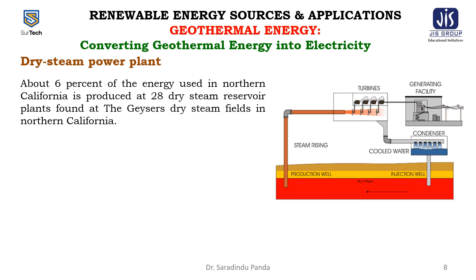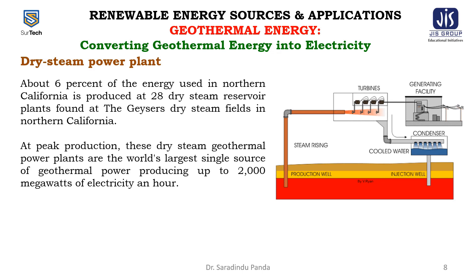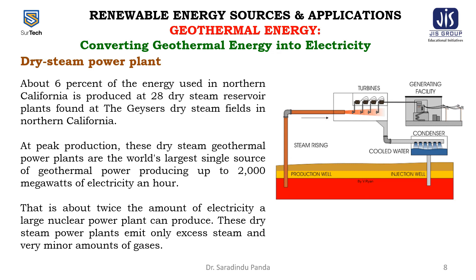About 6% of the energy used in Northern California is produced at 28 dry steam reservoir plants found at the Geyser's dry steam field. At peak production, these dry steam geothermal power plants are the world's largest single source of geothermal power, producing up to 2000 megawatts of electricity per hour — about twice the amount a large nuclear power plant can produce. These dry steam power plants emit only excess steam and very minor amounts of gases.